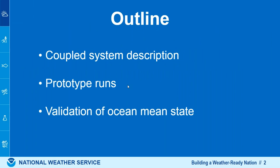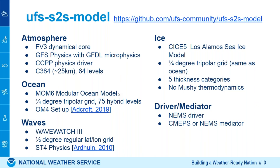The UFS stress models system: the first part is FV3 dycore with GFS physics, GFDL microphysics, and CCPP physical drivers. The data I'm showing is run C384, 64 levels. The ocean is basically GFDL's quarter-degree setting — all four settings for GFDL. The wave is at half degree resolution. The ice model follows the ocean, so it's also quarter degree. For the driver, we use NEMS mediator.